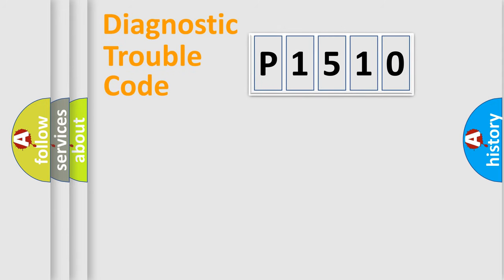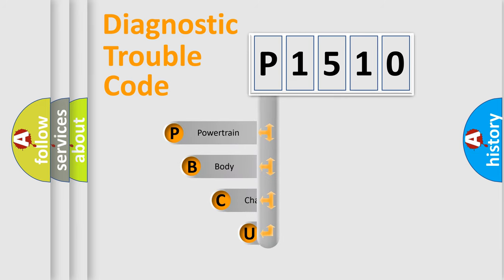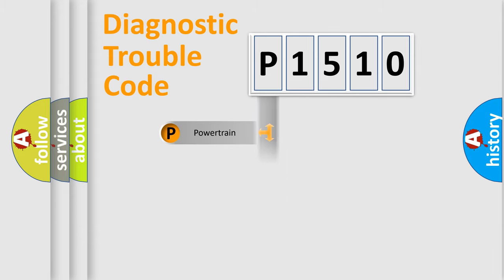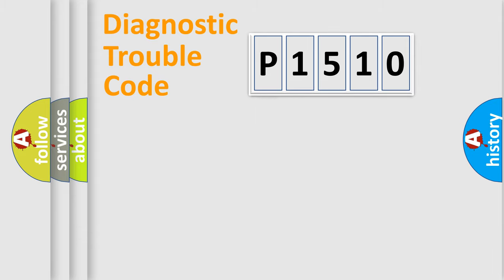Let's do this. First, let's look at the history of diagnostic fault code composition according to the OBD2 protocol, which is unified for all automakers since 2000. We divide the electric system of automobile into the four basic units: powertrain, body, chassis, network.